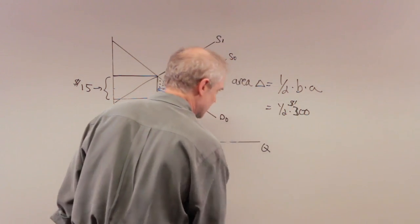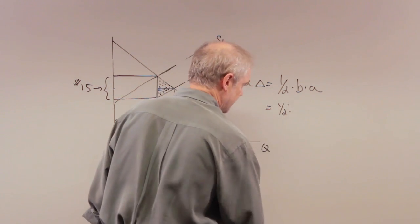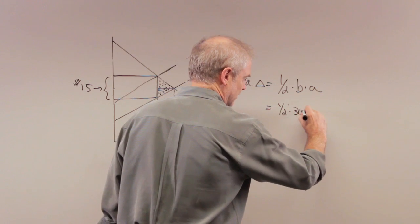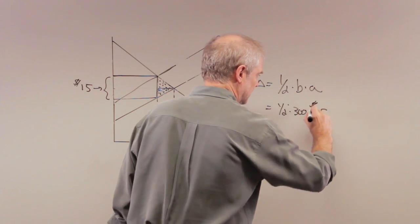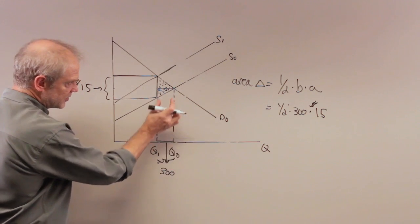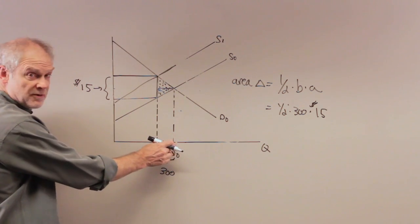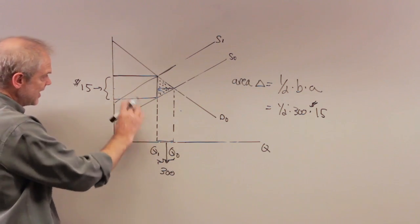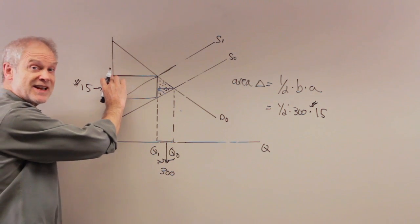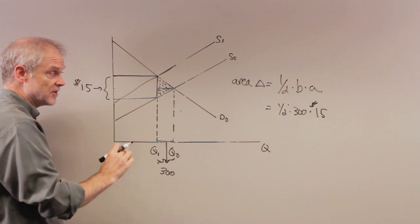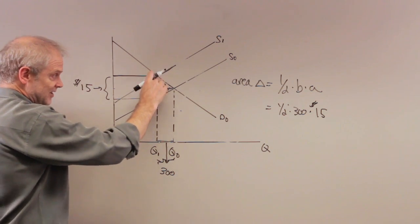300 units, excuse me, so I won't confuse you. 300 units times $15. Right? Here's the 300 units. That's this distance right here. The difference between the equilibrium quantity before the tax and after the tax. This distance right here is the tax itself. It's $15. So that's that distance right there.